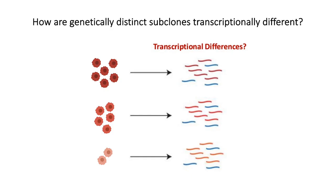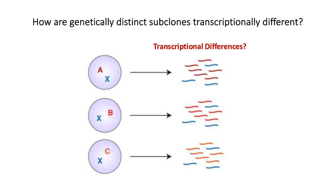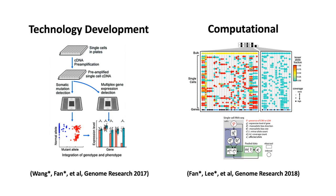In order to better understand how genetically distinct subclones may differentially shape therapeutic resistance, interact with cells within the tumor microenvironment, and impact clinical outcomes, we need to be able to assess how these different subclones may differ transcriptionally. That is, we need to simultaneously profile genetic and transcriptomic features from the same single cells, from the same tumor, from the same individuals. To achieve this, we can either take a technology development approach or a computational approach where we develop new computational methods that allow us to connect genetic and transcriptomic information from individual cells using existing data.